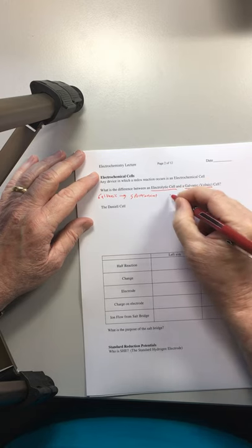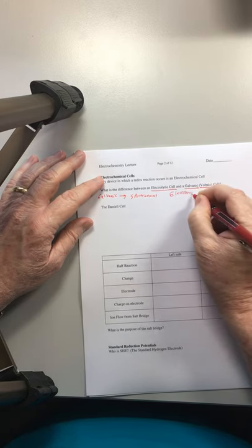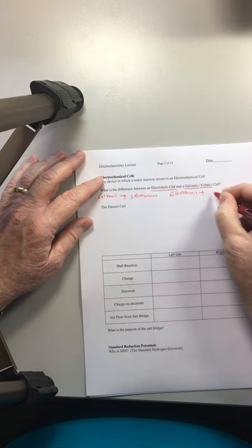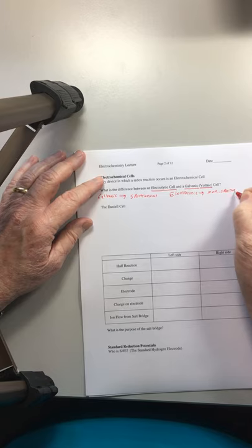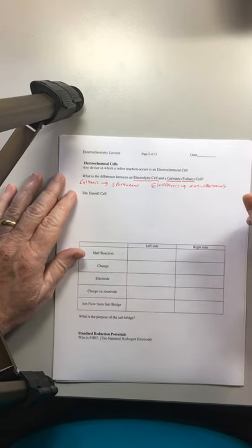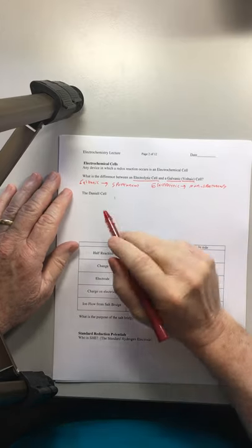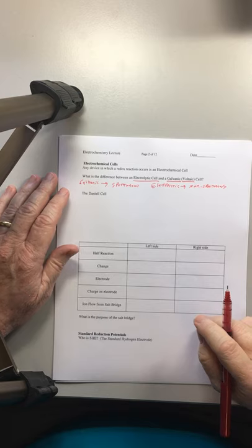And electrolytic are non-spontaneous. So if we can get useful electric work out of it, it's spontaneous. It's a galvanic cell.